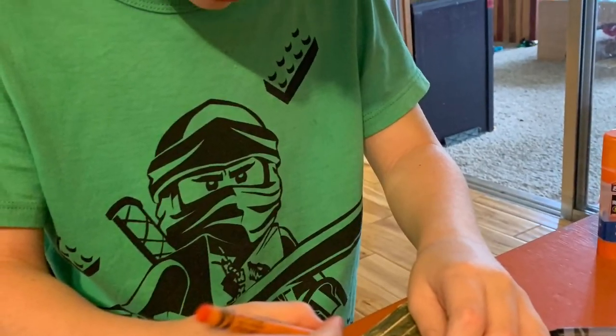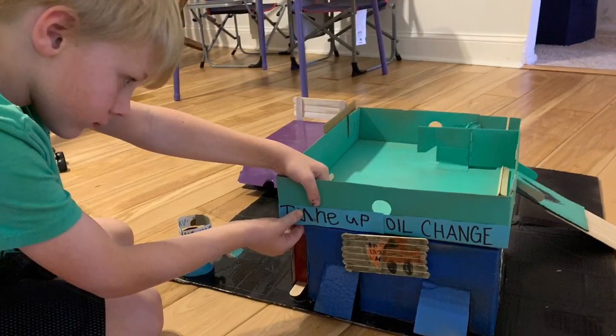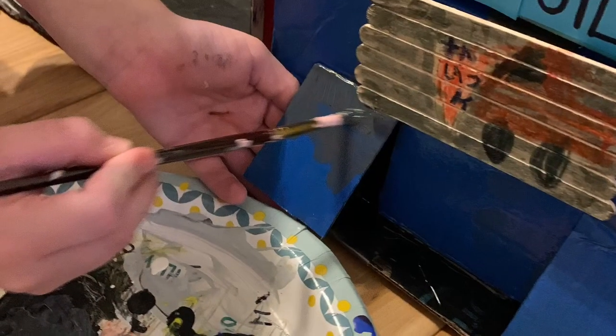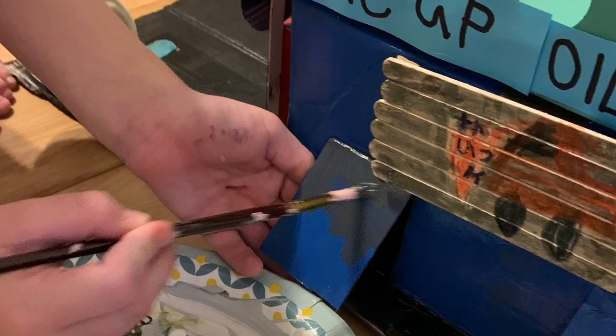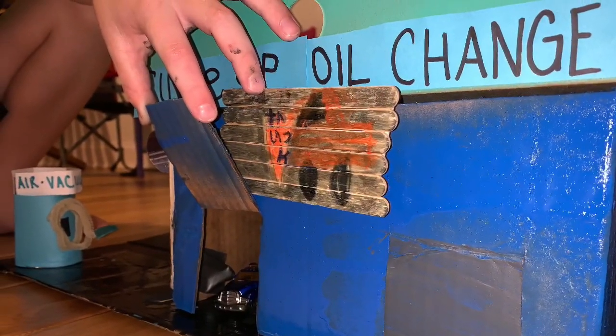JD is working on some signage for the garage part of the craft. He put some hard work into this craft. He's painting the garage doors gray to look like metal and he put a little tow truck in there for some of those realistic details.